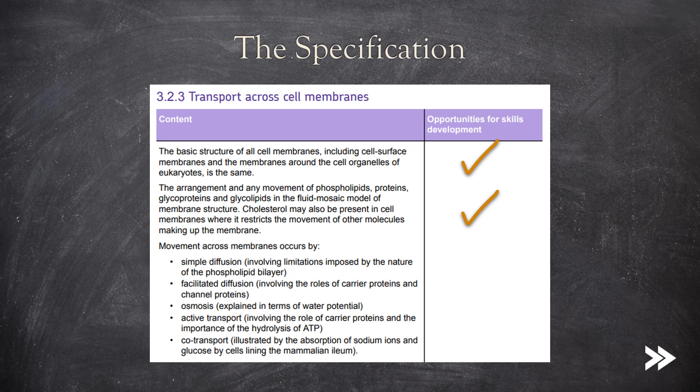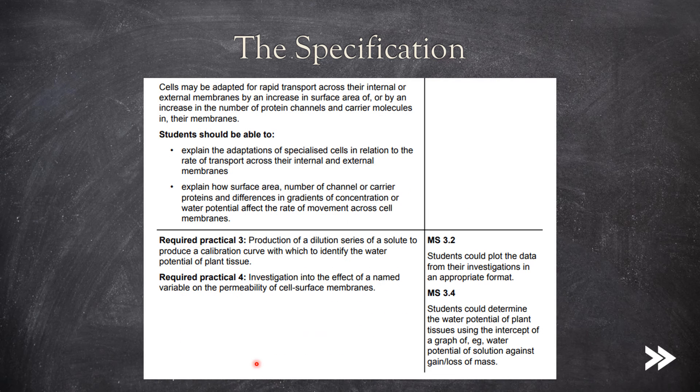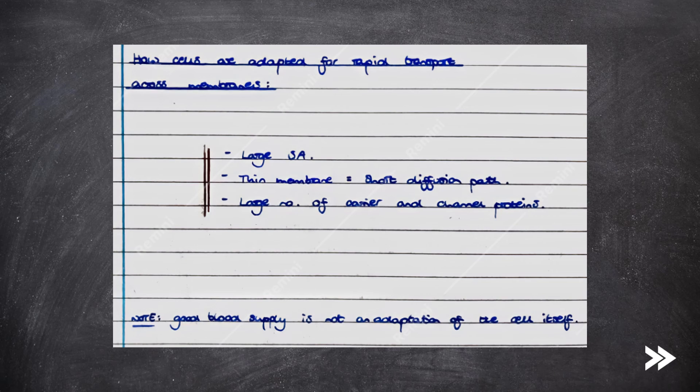Now that we've looked at the various ways in which substances may move across cell membranes, we just have to consider this small part of the specification, which is to acknowledge the various ways in which cells may be adapted for rapid transport, something that is also covered later on when we talk about mass transport, digestion and absorption. So how are cells adapted for rapid transport across their membranes?